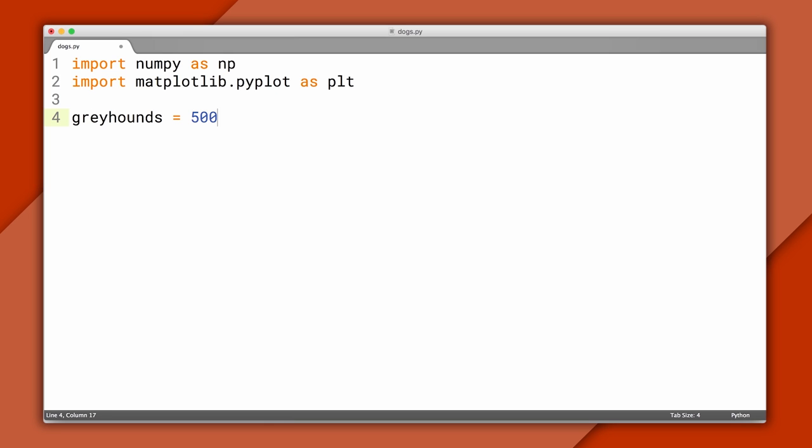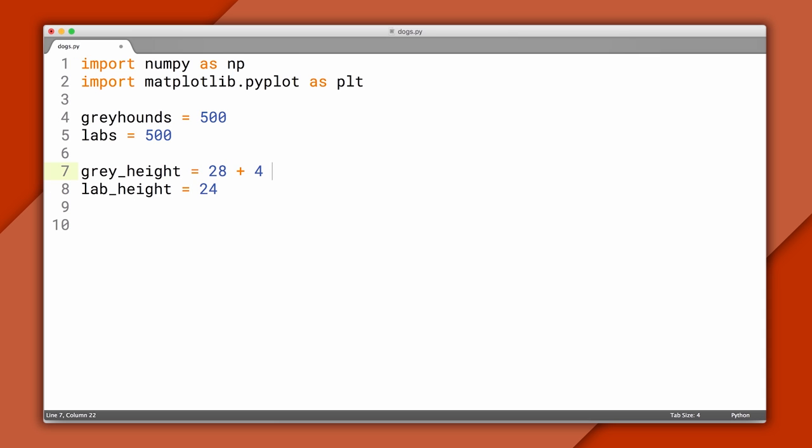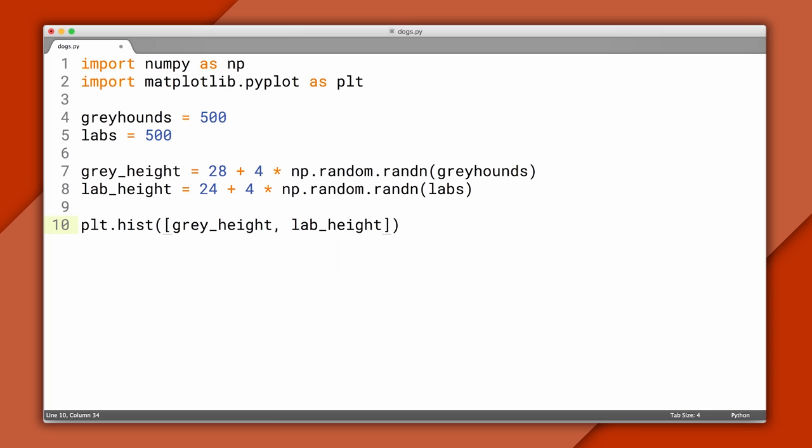I'm creating a population of 1,000 dogs, 50-50 greyhound-labrador. I'll give each of them a height. For this example, we'll say that greyhounds are on average 28 inches tall and labradors are 24. Now, all dogs are a bit different. Let's say that height is normally distributed, so we'll make both of these plus or minus 4 inches. This will give us two arrays of numbers, and we can visualize them in a histogram. I'll add a parameter so greyhounds are in red and labradors are in blue. Now we can run our script.